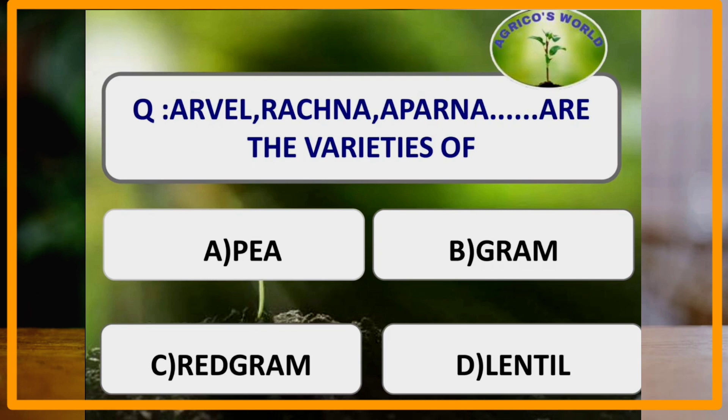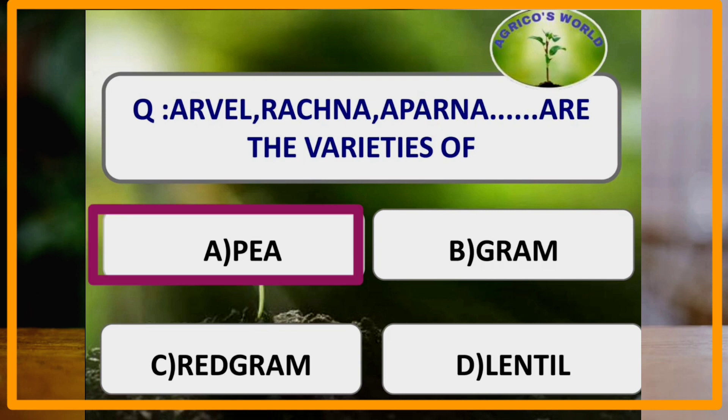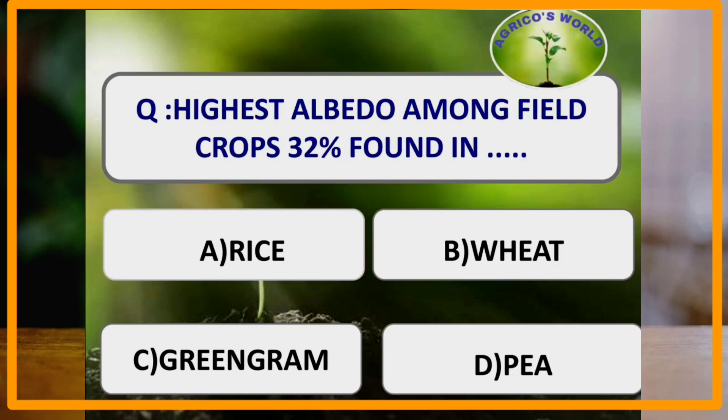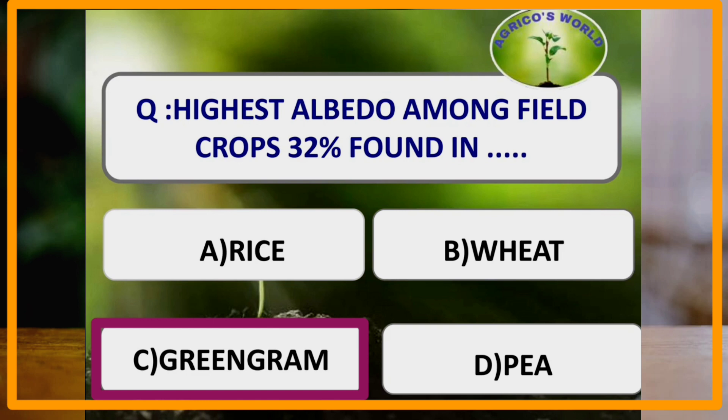Arval, Rachana, and Aparna are the varieties of pea. Highest albedo among field crops, that is 32%, is found in green gram. Albedo of 32% is found in green gram, whereas albedo percentage in rice is 12%.